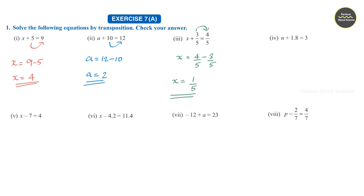Question number 4: n plus 1.8 is equal to 3. Here we can take this 1.8 to the other side. Therefore, n is equal to 3 minus 1.8, that is, 1.2.